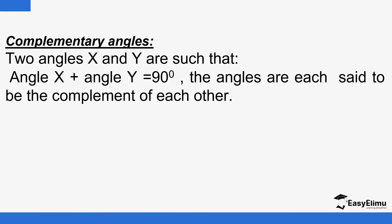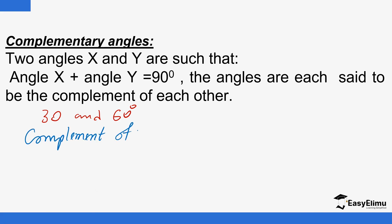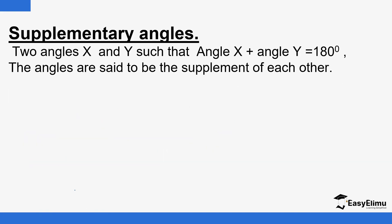We also have complementary angles — two angles that sum up to 90 degrees. For example, 30 and 60 degrees. Angle X plus angle Y equals 90 degrees; the angles are said to be complements of each other. For example, the complement of 20 degrees is 70 degrees — meaning what you need to add to 20 to make 90. The complement of 50 degrees is 40 degrees.